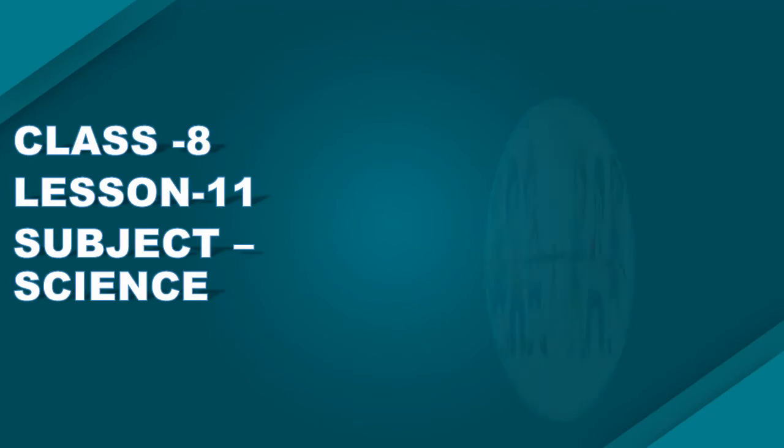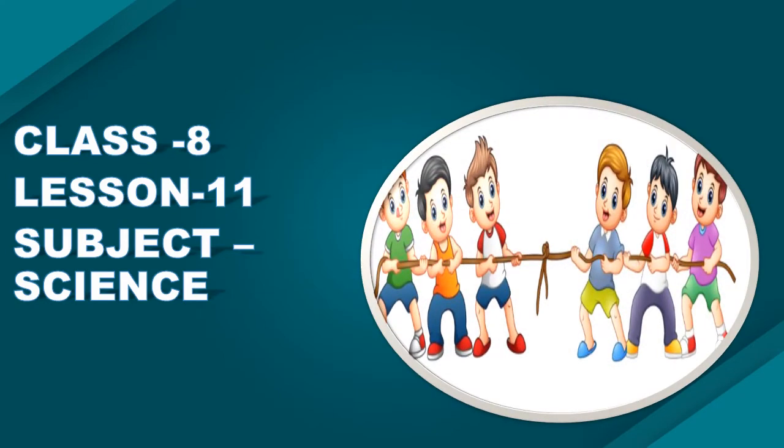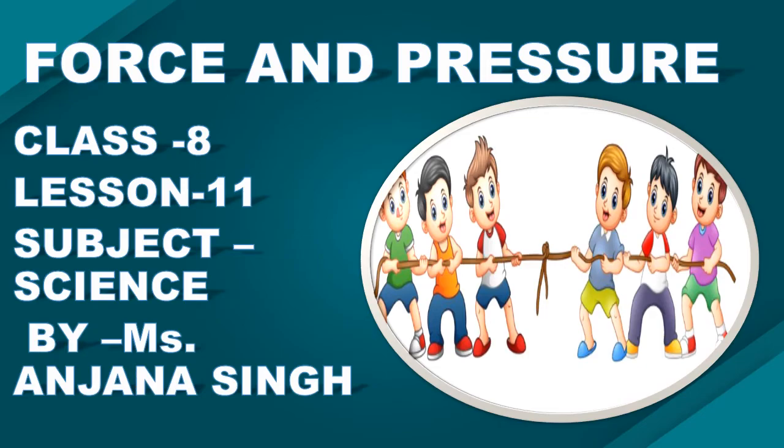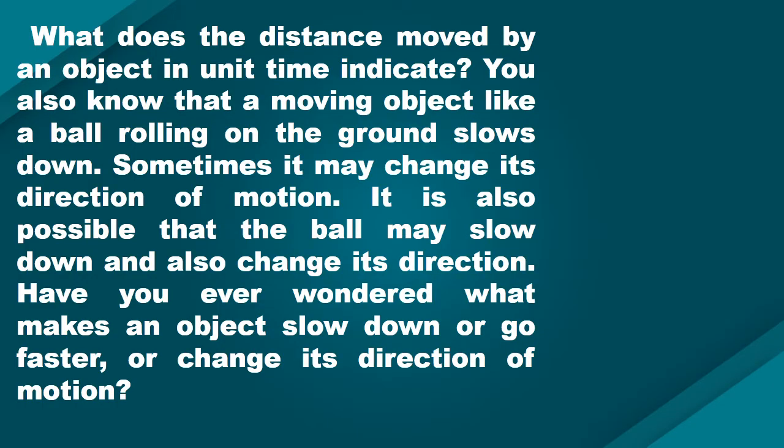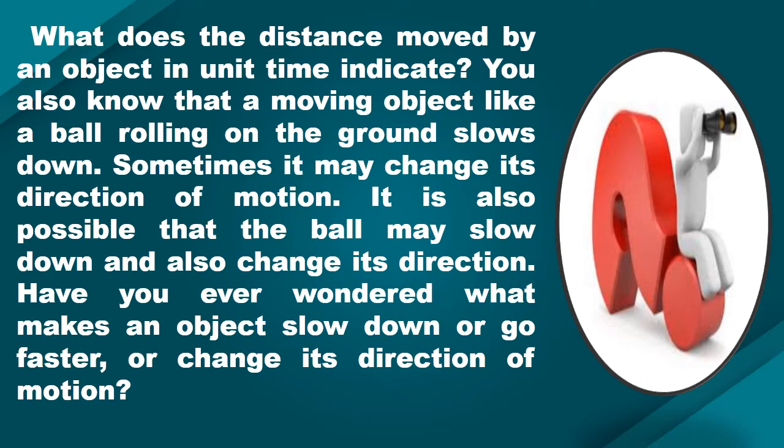Force and Pressure, Class 8, Lesson 11. Let's start with this chapter today. What does the distance moved by an object in a unit time indicate? You also know that a moving object like a ball rolling on the ground slows down after some time, sometimes changes its direction of motion, or may slow down and also change its direction. Have you ever wondered what makes an object slow down, go faster, or change its direction of motion? These are the questions we are going to try to answer in this video.